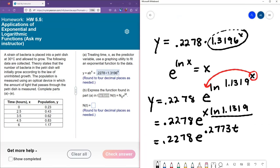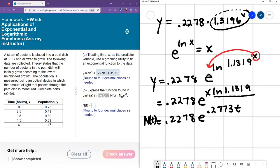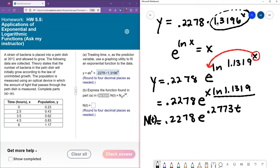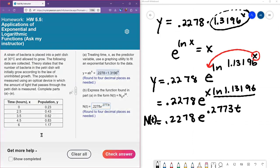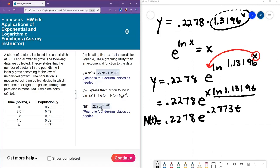So I'm replacing this natural log of 1.3196 with 0.2773. Let me double check that one more time. 0.2773. And I'm going to switch my variable to t. And this will give us our model written with a base of e rather than the base of 1.3196. So let's type that in. We have 0.2278e to the 0.2773t. And that gives us our model n of t.